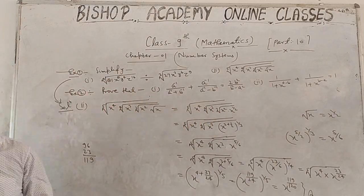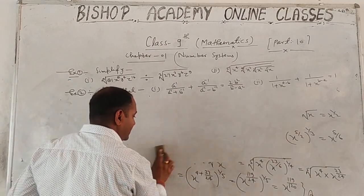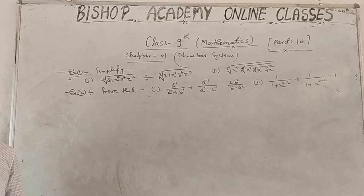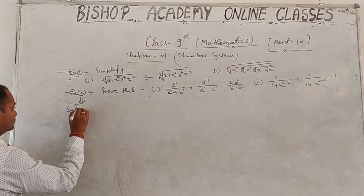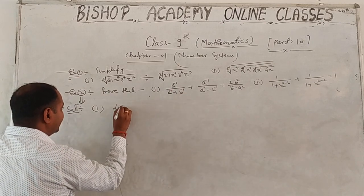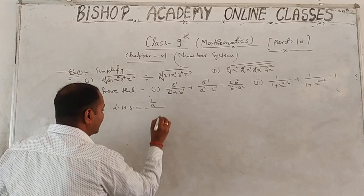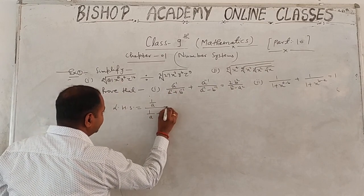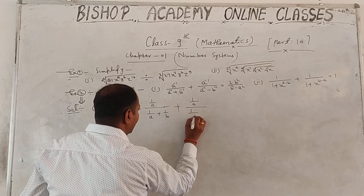Example number 2, first part: prove the given identity. We write a⁻¹ as 1/a and b⁻¹ as 1/b. So the expression becomes: (1/a) upon (1/a + 1/b) plus (1/a) upon (1/a − 1/b).